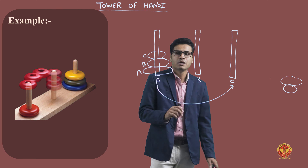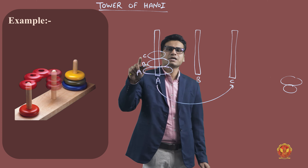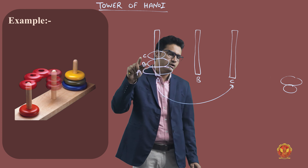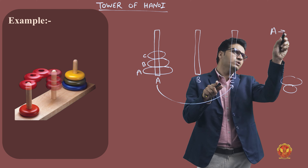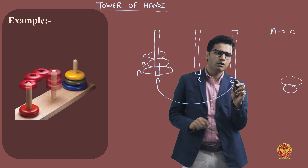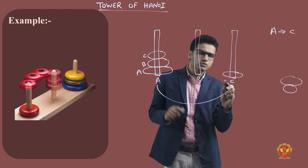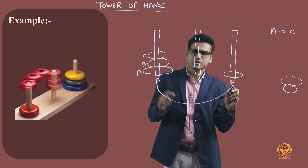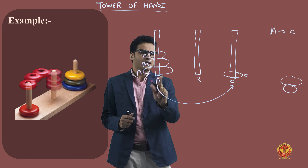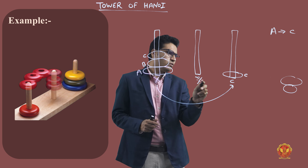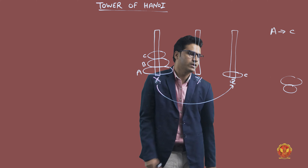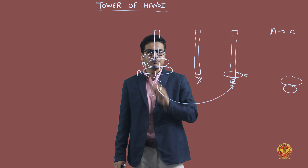First, we move the smallest plate from A to C — let's rename the rods: this is X, this is Y, and this is Z. So first we move the small plate from X to Z.